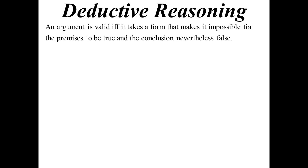An argument is valid, or logically valid, if and only if it takes a form that makes it impossible for all the premises to be true and the conclusion false. Because if all the premises are true, the conclusion must be true for the proof to be good.